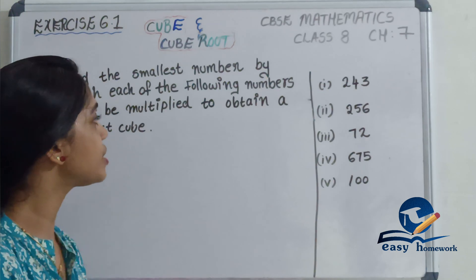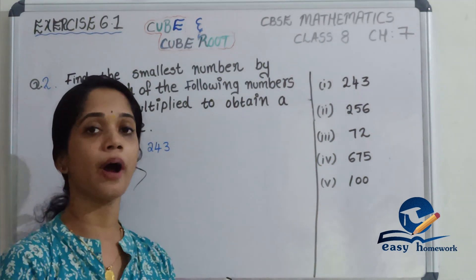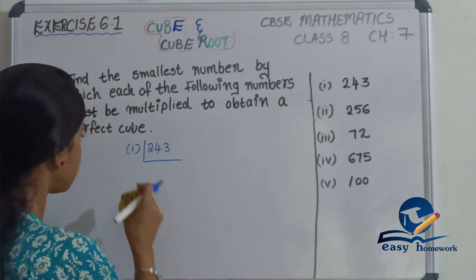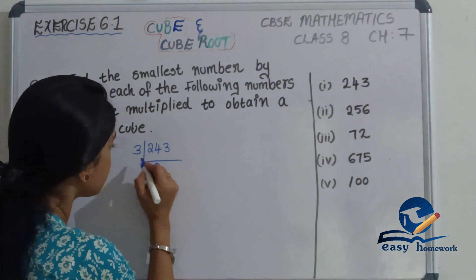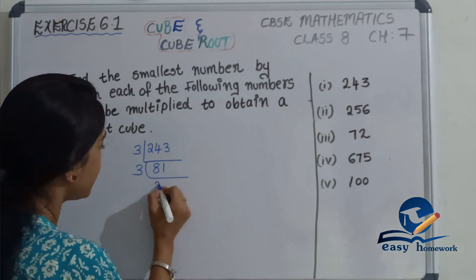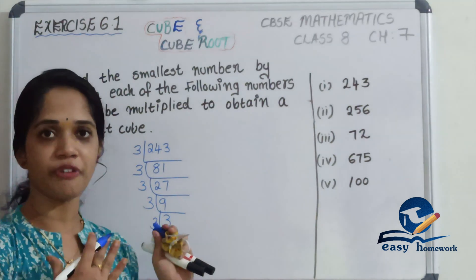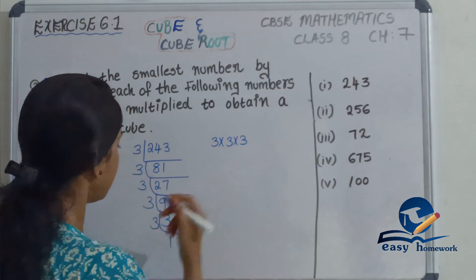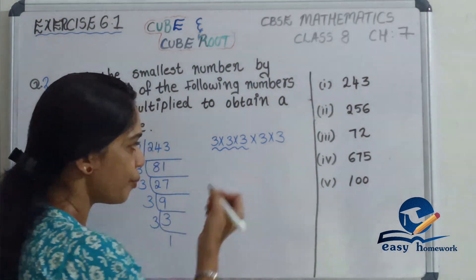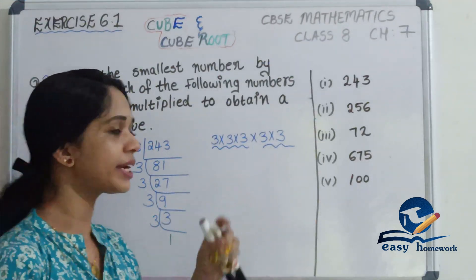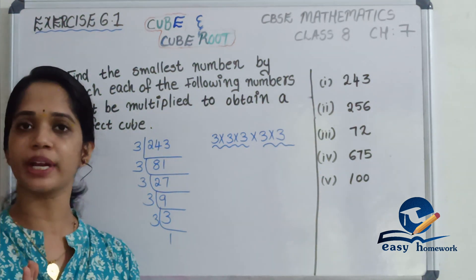Let's go to this class. Let's look at the first question: 243. Is 243 a perfect cube? Check: 3 times 81, then 3 times 27, then 9 times 3. So 243 equals 3 × 3 × 3 × 3 × 3. We have prime factors 3 times 3 times 3, again 3 times 3. Next we have triplets. Here we have an extra 3 — so 243 is not a perfect cube.